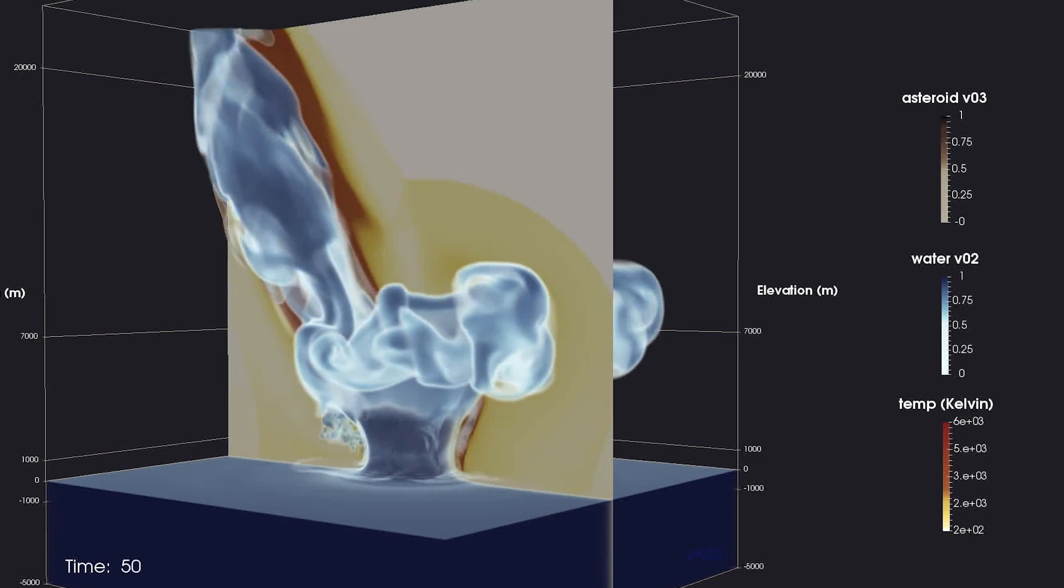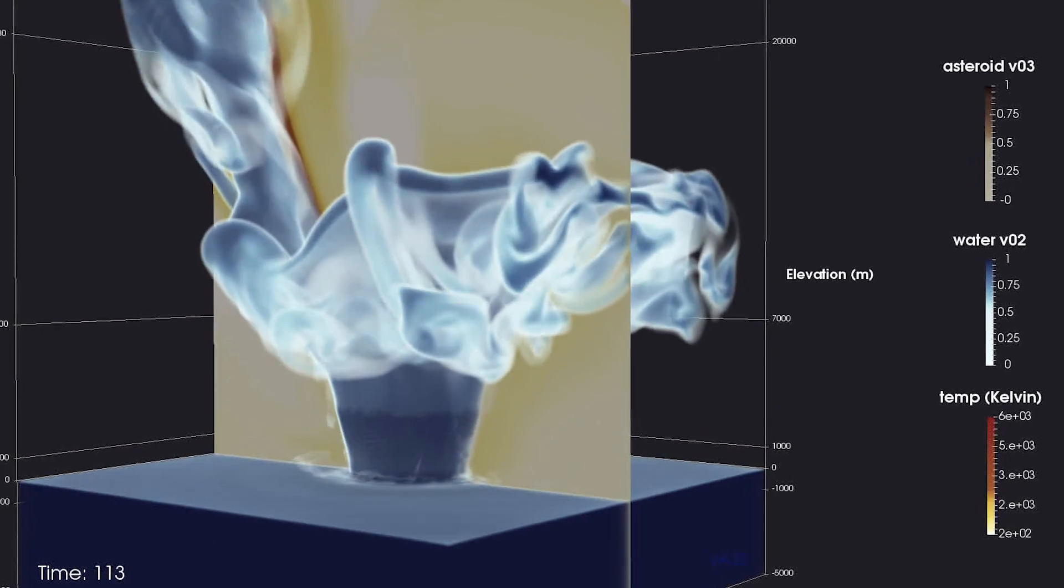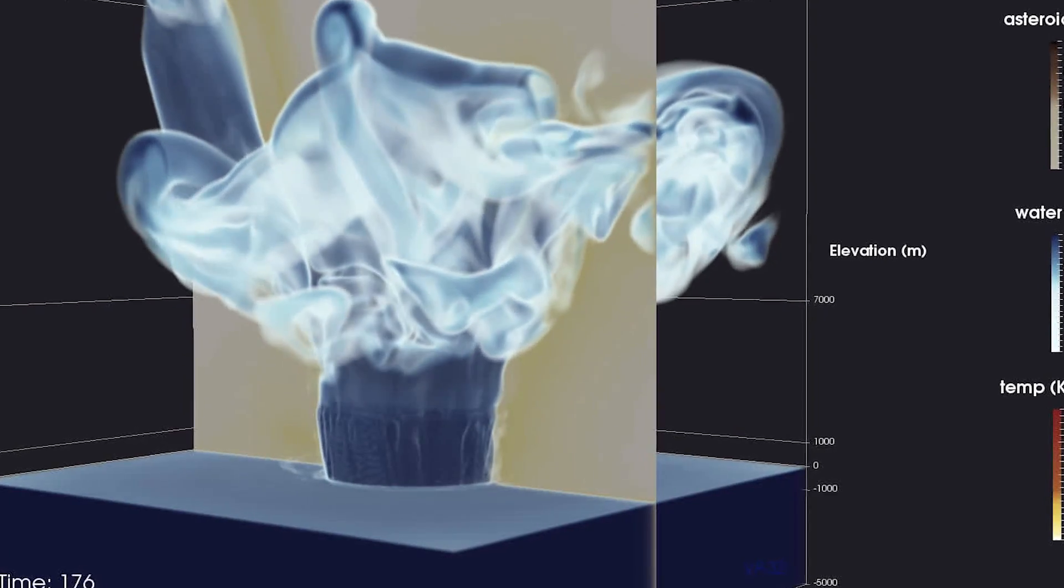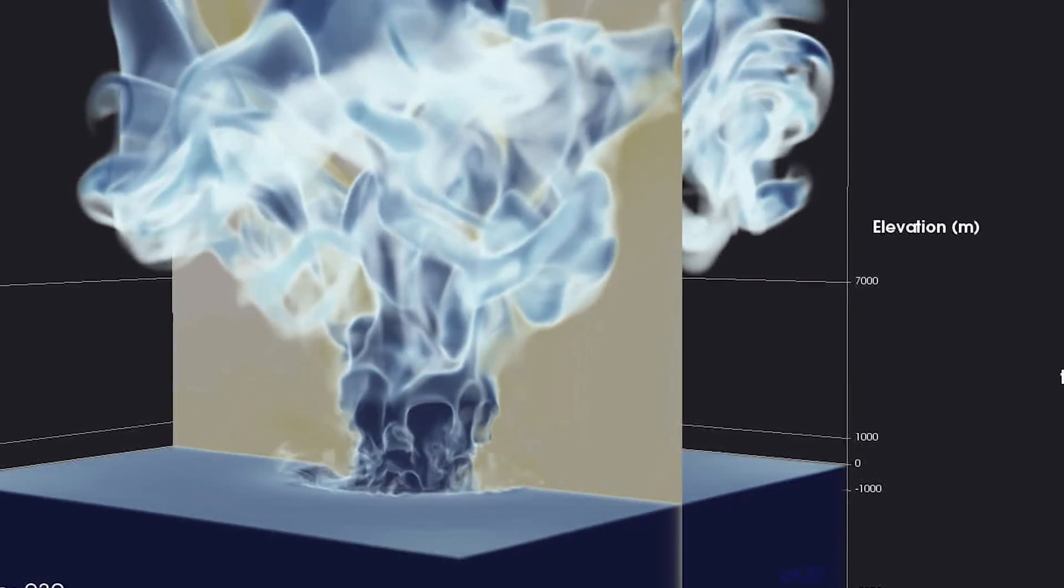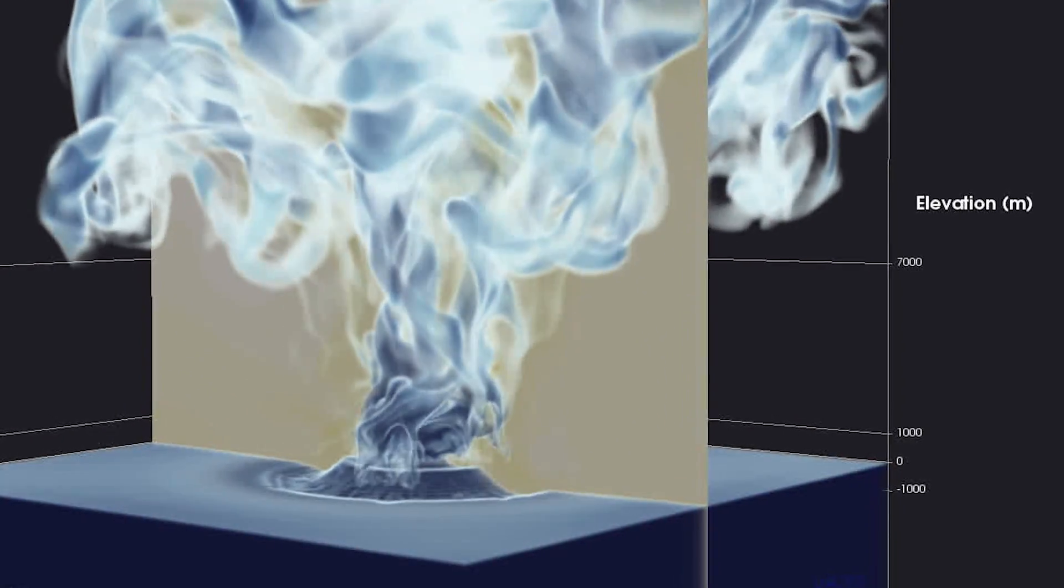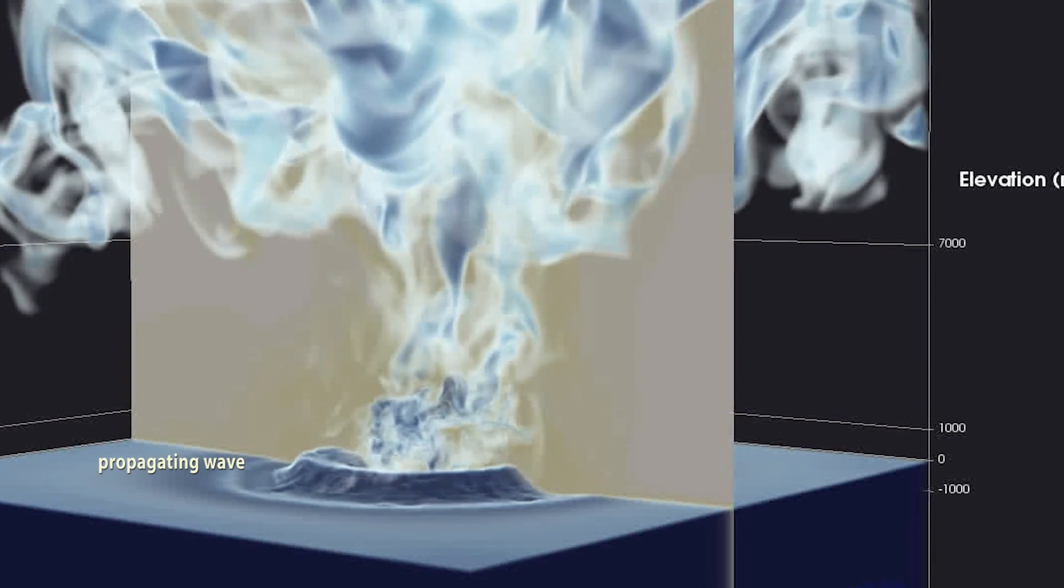Pressure waves in both the air and water show differences in the transfer of kinetic energy. Colliding shock waves in the atmosphere and water, as well as the wind at the water's surface, hinder the creation of a propagating wave.